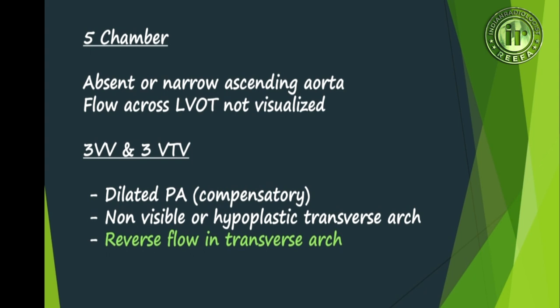In the five-chamber or LVOT view there is an absent or narrow ascending aorta and flow across the LVOT is not visible. In the three-vessel and three-vessel trachea view we can see a dilated pulmonary artery as a compensatory mechanism, a non-visible or hypoplastic transverse arch, and the typical finding of reversal of flow in the transverse arch.